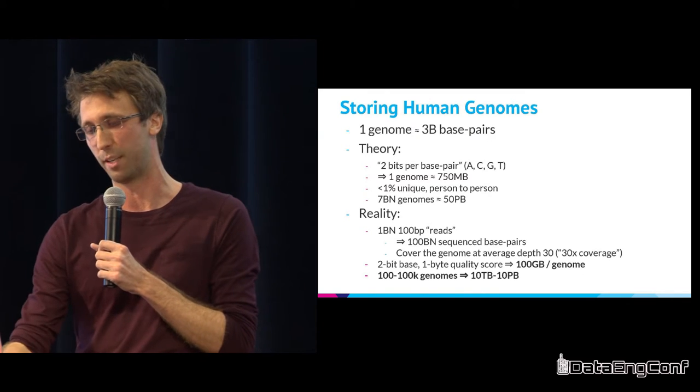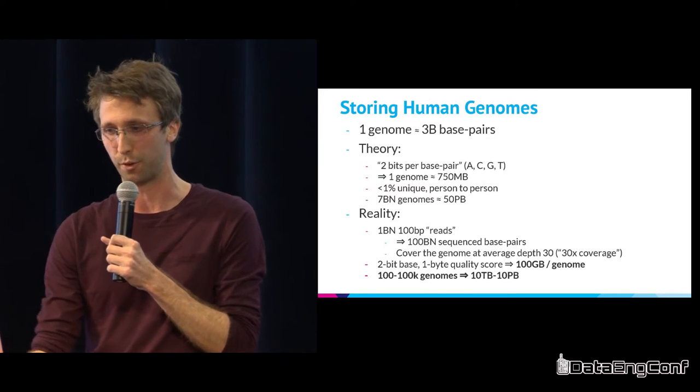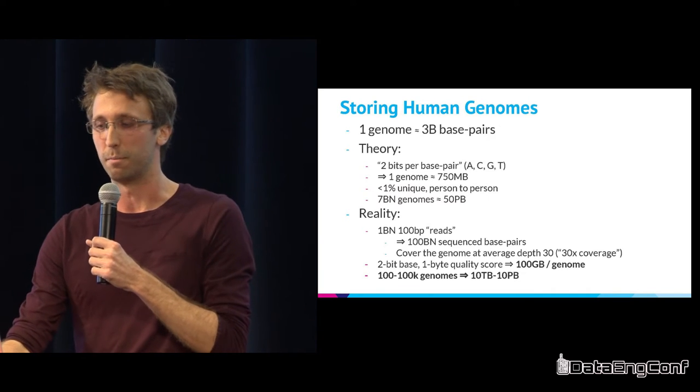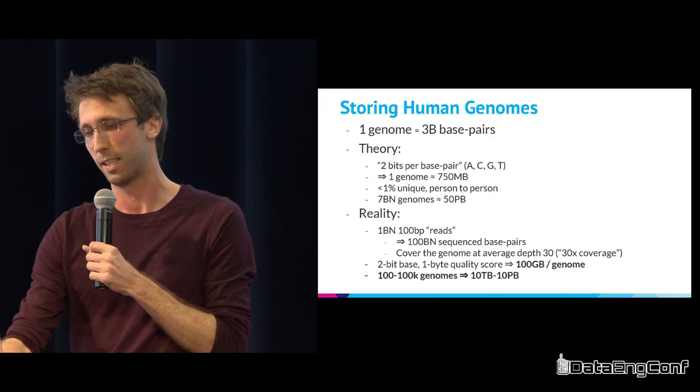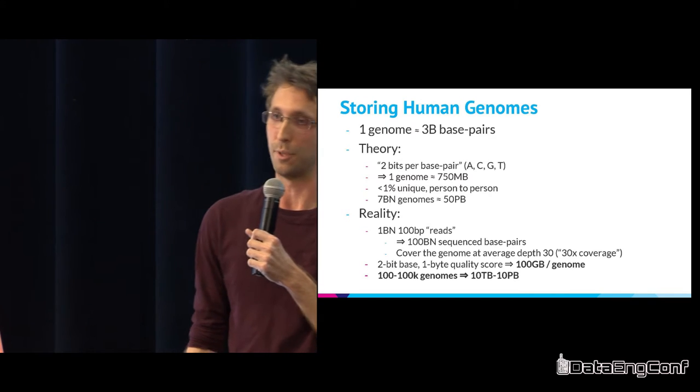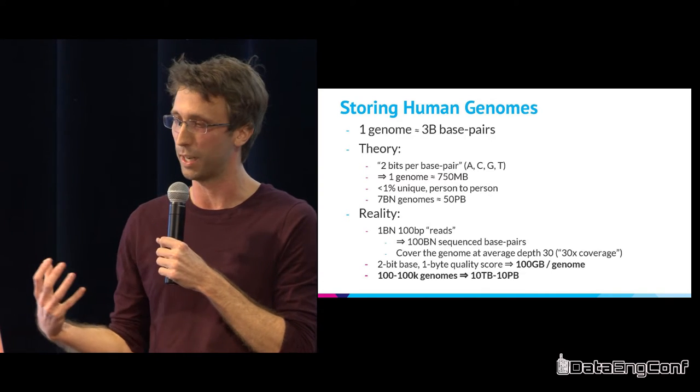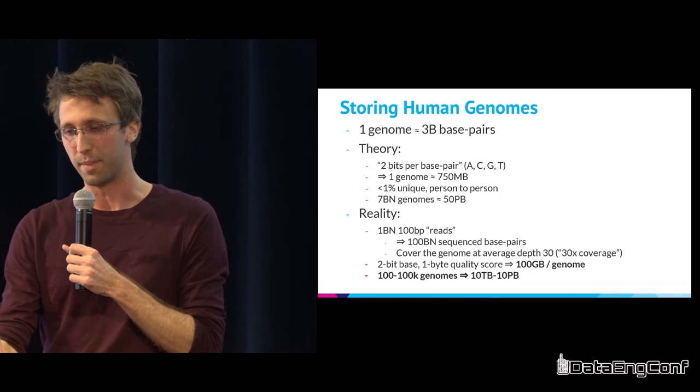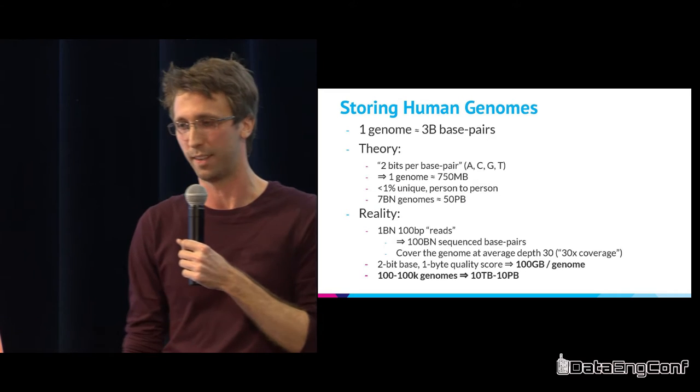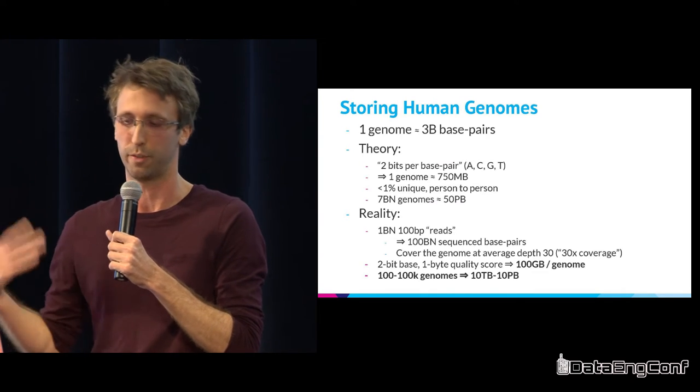Just quickly kind of back of the envelope talking about what it takes to store and process human genome data in ideal and real world settings. So as I mentioned you have three billion bases. You can think of each one as one of four possibilities which can be represented by two bits. So you'd have four bases per byte. So three billion bases would take up about 750 megabytes of space. An optimization is that far less than one percent of that sequence is unique from person to person.